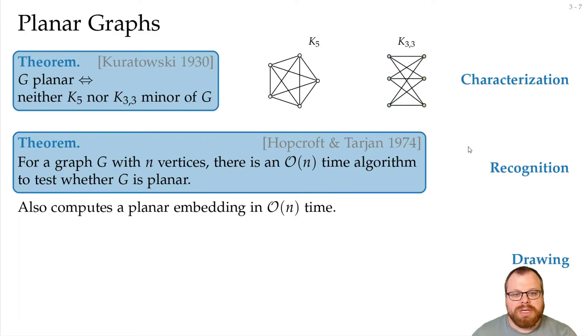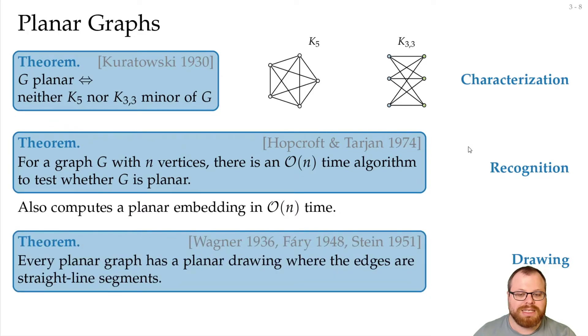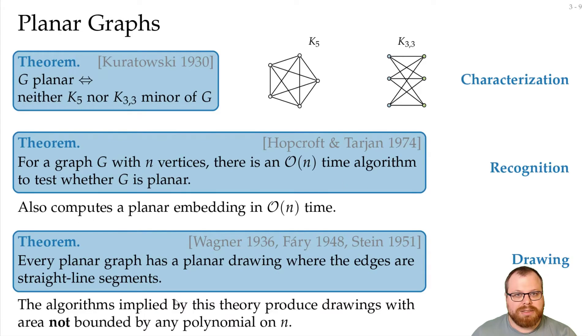About drawings, so far we had force-directed algorithms that work for any graph, we have Tutte's algorithm that works for three-connected planar graphs, then we had algorithms for trees and series parallel, but no algorithm that works for all planar graphs and draws them planar. But there are a few quite old theorems, namely by Wagner, by Fary and by Stein, and they were all proven independently. They say every planar graph has a planar drawing where the edges are straight line segments. So in fact, we can draw every planar graph this way. The problem with these proofs is, the area is not bounded by any polynomial in n, so it is at least exponential in n.